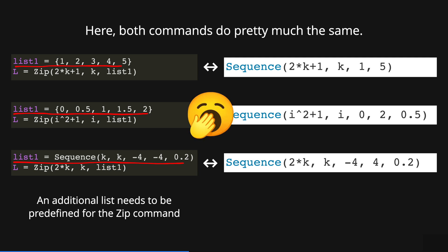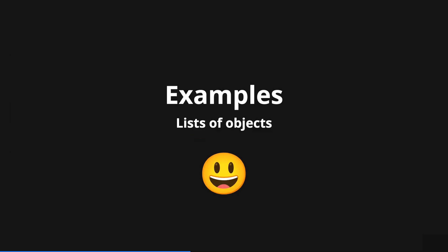Perhaps the only difference here is that an additional list needs to be predefined for the zip command. Also, you might be thinking that these examples are quite boring. What is the point of having two commands that do exactly the same thing? But don't worry, things get more interesting once we cover examples with lists of objects.